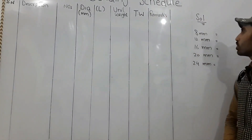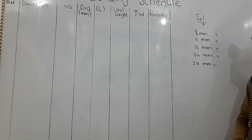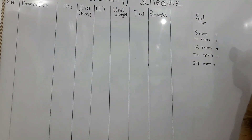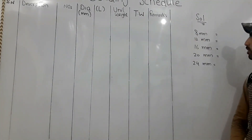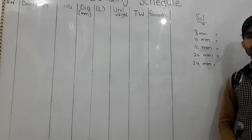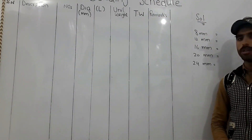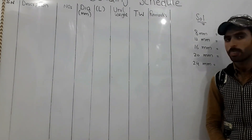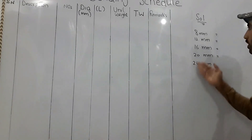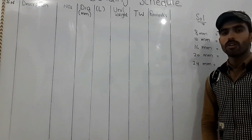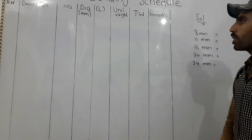Okay friends, today in bar bending schedule the first solution covers these diameters: 8mm, 12mm, 16mm, 20mm, and 24mm — these are the diameters of steel bar that we use most commonly.